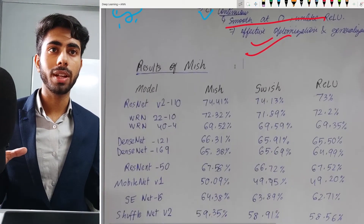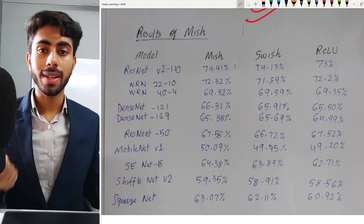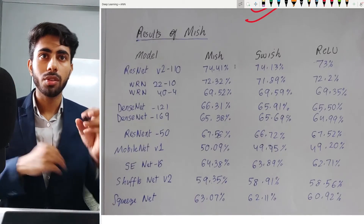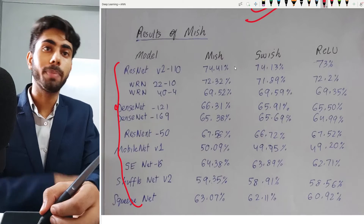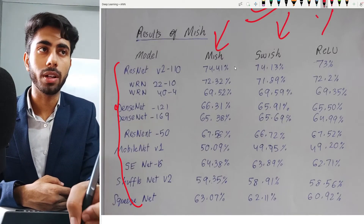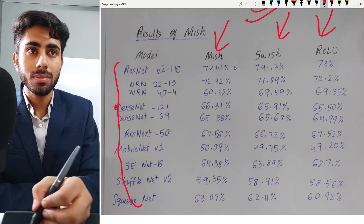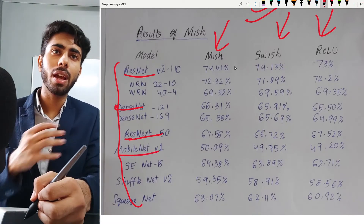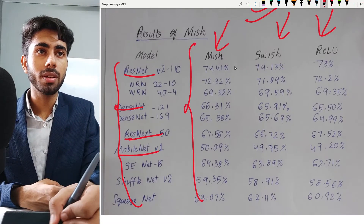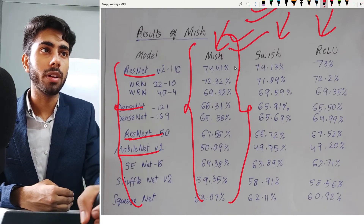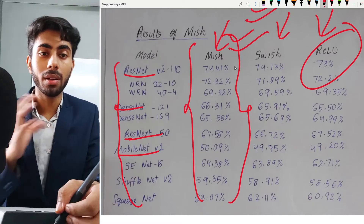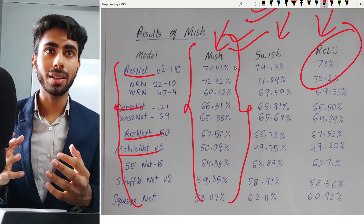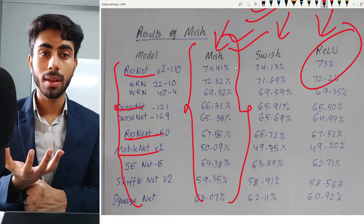Now let us compare mish activation with swish and relu based on their accuracy on different kinds of models. Here you can see a list of different models and their respective accuracies on mish, swish, and relu. For ResNet, WRN, DenseNet, ResNext, MobileNet, and basically every other model, the accuracy of mish activation is far better than relu and comparable to that of swish.